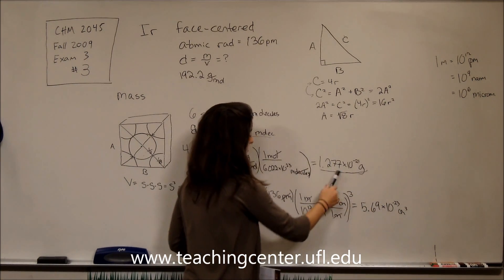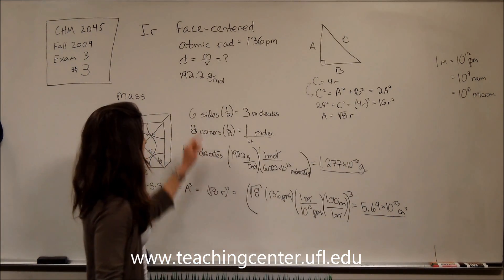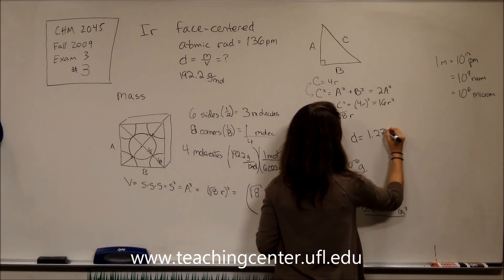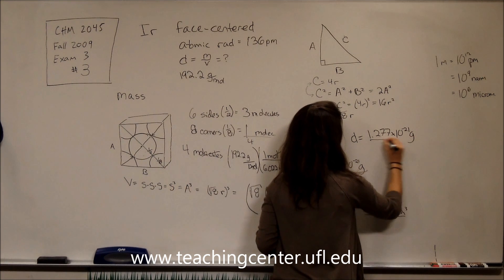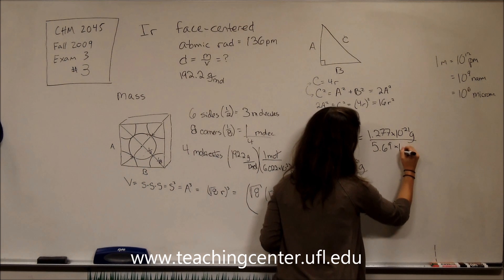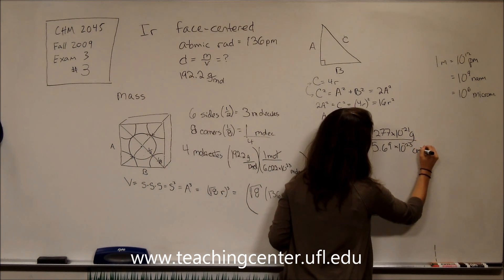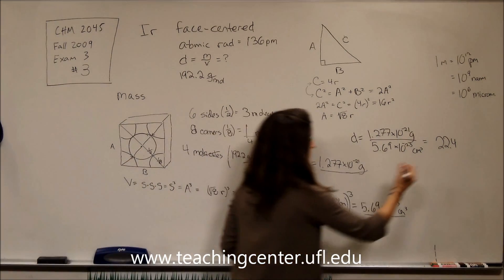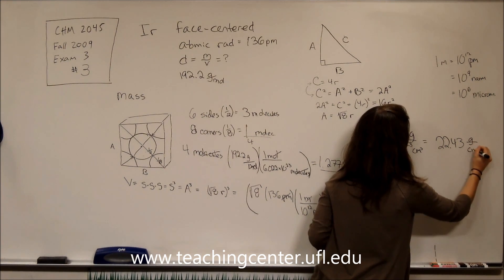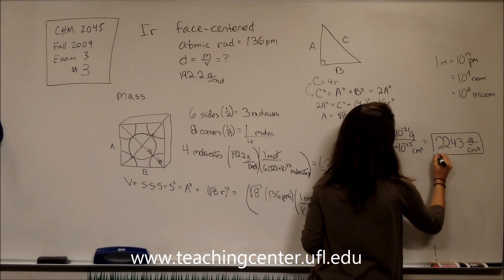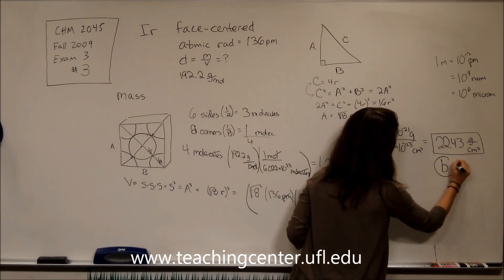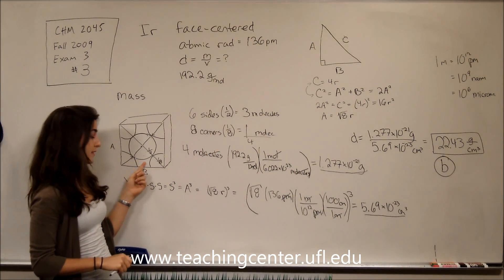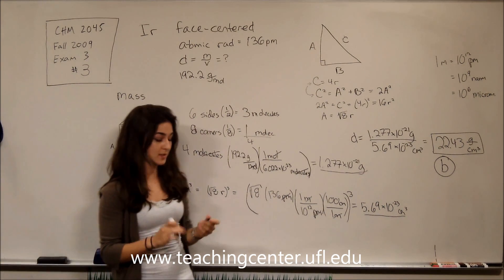Now we have both volume and mass. Dividing mass by volume for density: 1.277 times 10 to the negative 21 grams divided by 5.69 times 10 to the negative 23 centimeters cubed gives us 22.443 grams per centimeter cubed. Rounding off, we get answer choice B. The key to this problem is knowing what face-centered cubic means, accurately drawing the unit cell, and calculating volume and mass from the given information.